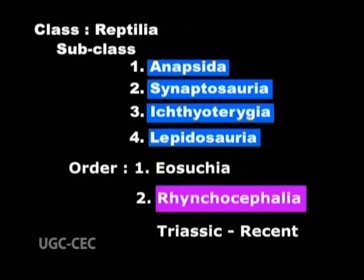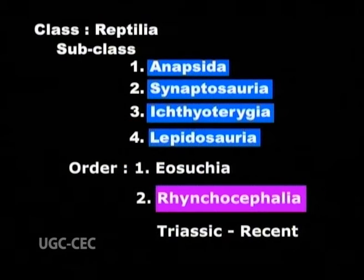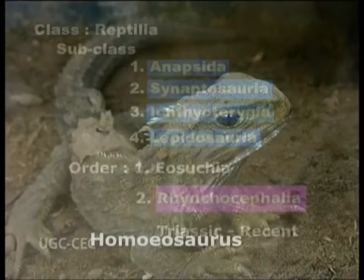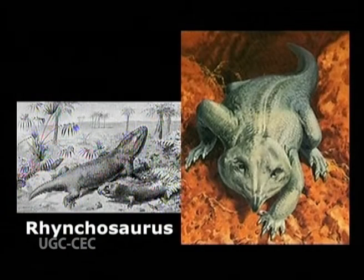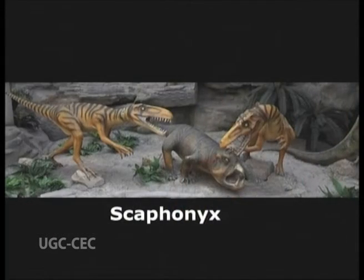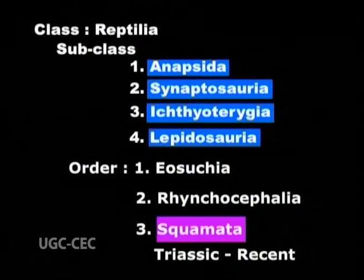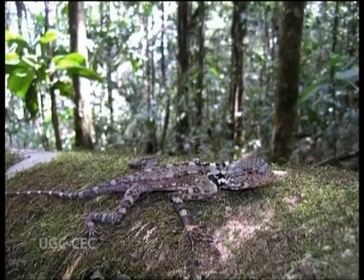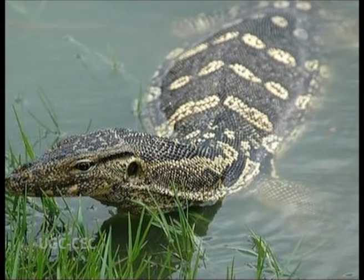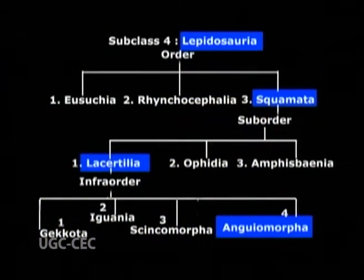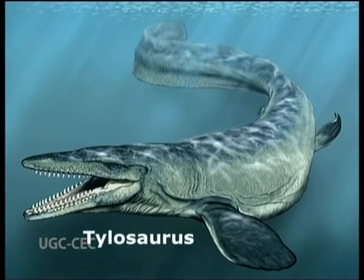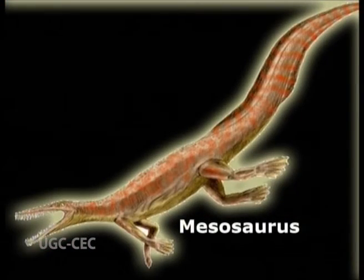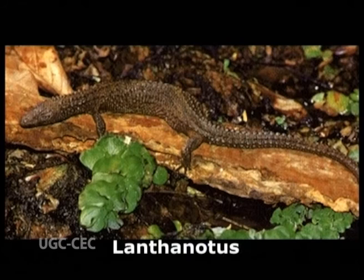Order 2, Rhynchocephalia — animals of this group exist since Triassic to recent times. Examples are Homeosaurus, Rhynchosaurus, and Sphenodon. Order 3, Squamata — members of this group also existed in Triassic and are seen in recent times as well. In Infraorder Anguimorpha, Dolichosaurus, Aigialosaurus, Tylosaurus, Mosasaurus, and Lanthanotus are extinct.